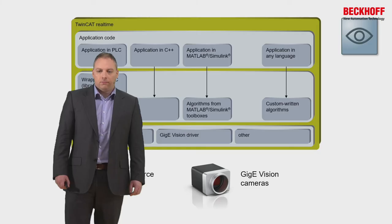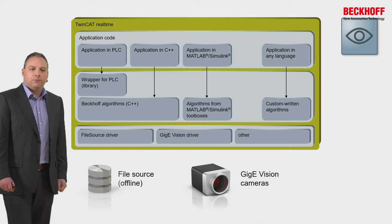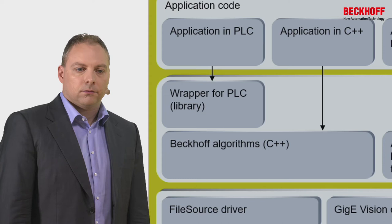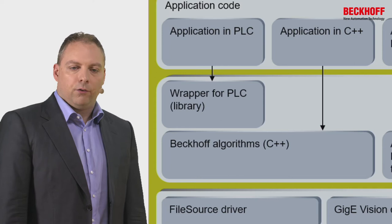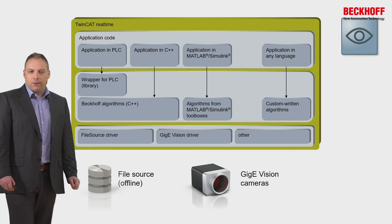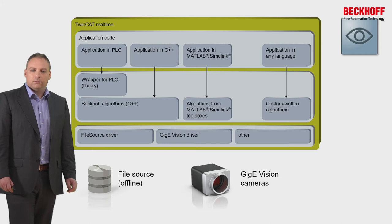The GigEVision standard gives us a lot of flexibility in camera choice. Looking more closely at the vision architecture, we have different opportunities to acquire images: a file source control to upload images from hard disk, a camera driver to receive images from cameras, and all our other protocols for receiving data. The algorithms for analysis are generally written in C++ and we provide the library with a wrapper for the PLC. It will also be possible to use the library directly for C++ programming and we will have an interface for MATLAB Simulink. You can also program your own algorithms since we provide full access to the image data down to a single pixel, and it is also possible to save images to the hard disk.